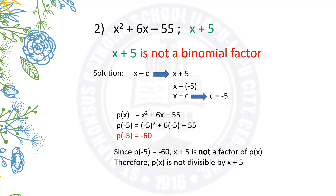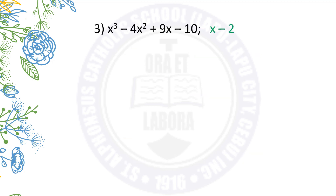Therefore, the polynomial is not divisible by x plus 5 and is not considered a binomial factor. In the given polynomial x cubed minus 4x squared plus 9x minus 10, do you consider that x minus 2 is a binomial factor?